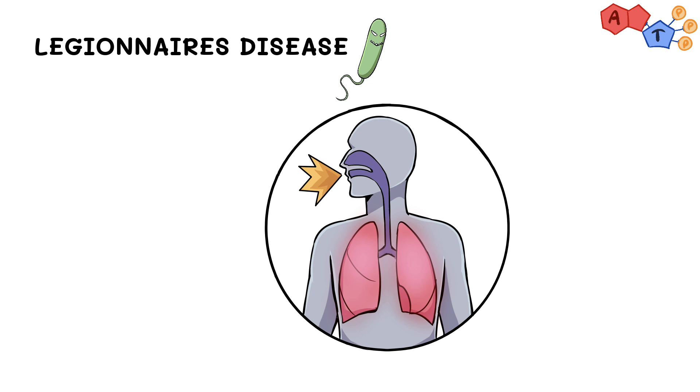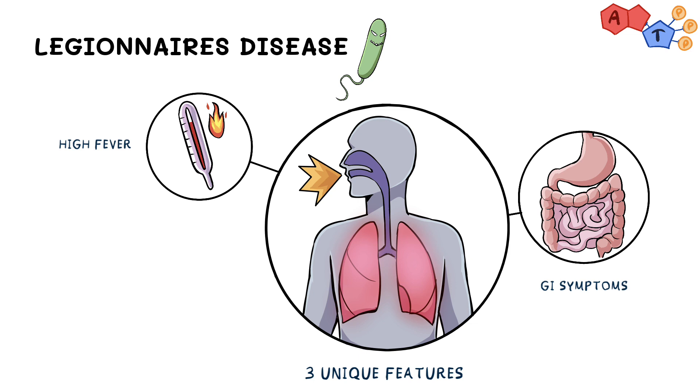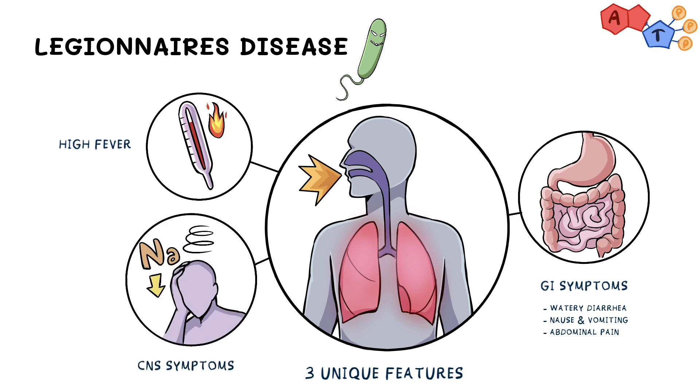So, how can we differentiate this from other types of atypical pneumonia? Well, fear not. Legionella patients present with three unique features. They will present with high fever. They will also have GI symptoms like watery diarrhea, nausea and vomiting, and abdominal pain. And thirdly, they can have CNS symptoms. These patients may have hyponatremia which can also lead to confusion.